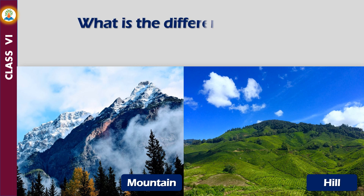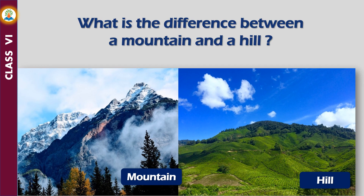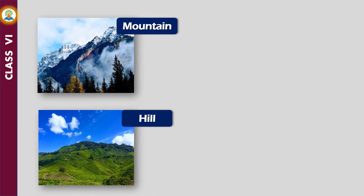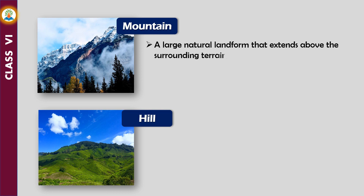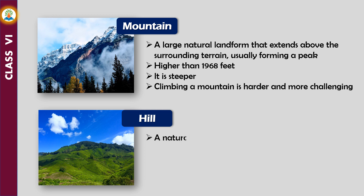What is the difference between a mountain and a hill? A mountain is a large natural landform that extends above the surrounding terrain, usually forming a peak higher than 1,968 feet. It is steeper, and climbing a mountain is harder and more challenging.